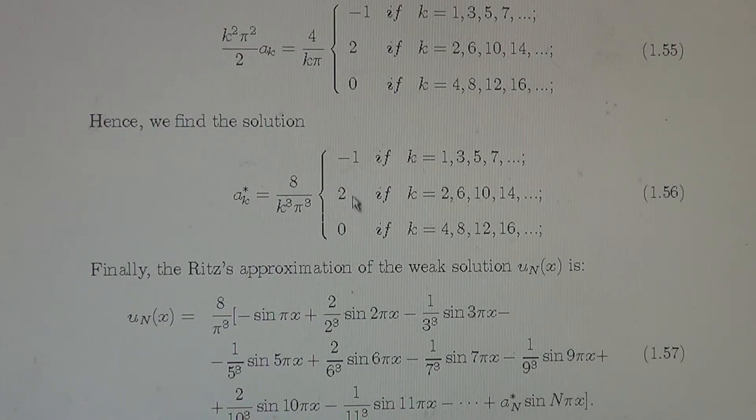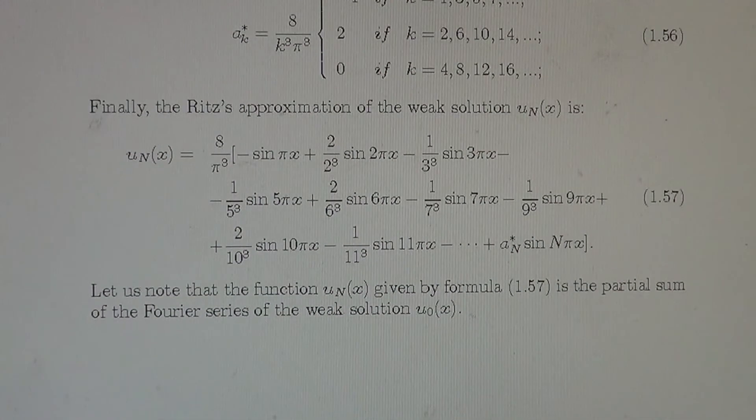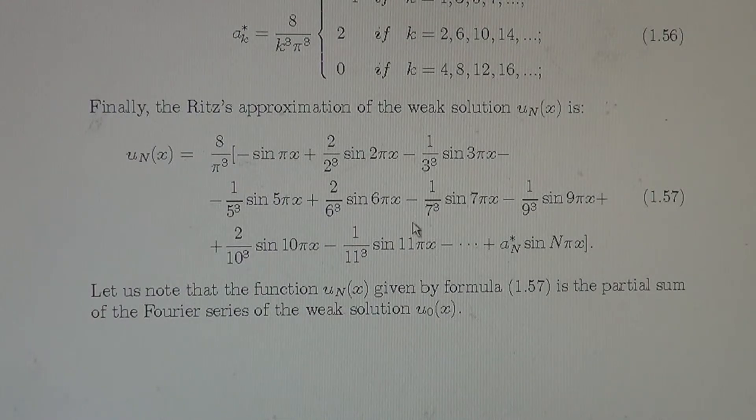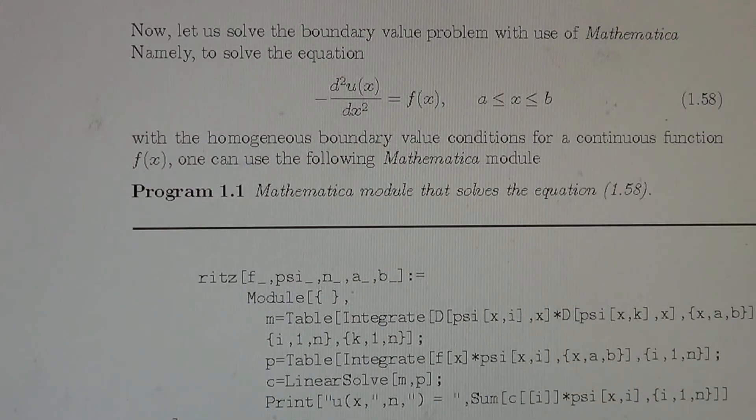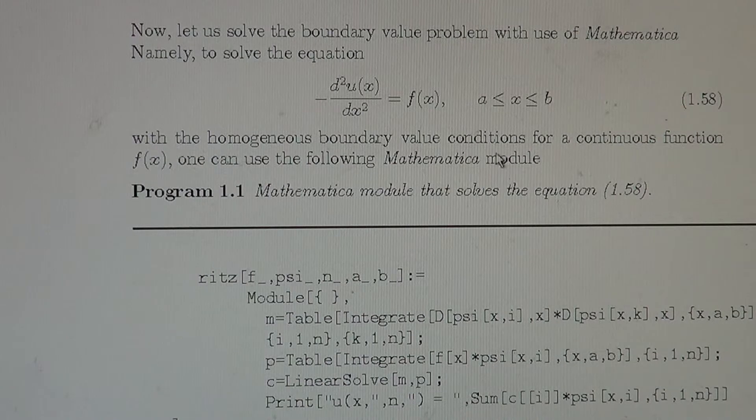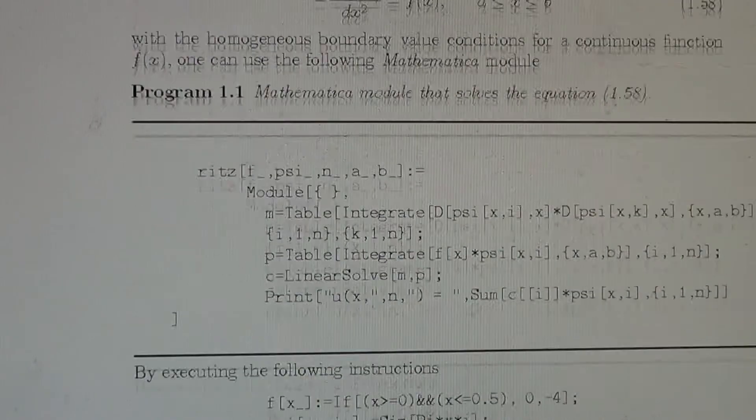the Ritz coefficients are A k star. Finally, the Ritz approximation of the weak solution is the series of sines, which in fact is a partial sum of Fourier series of the weak solution we know in this example. Now let us go to solve such academic equation with right hand side F and homogeneous boundary conditions by the Mathematica module.